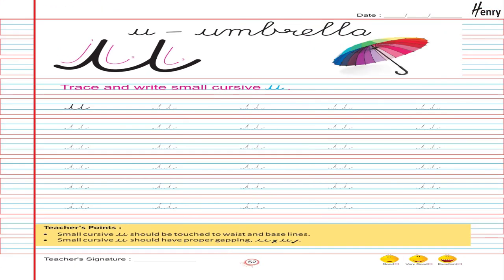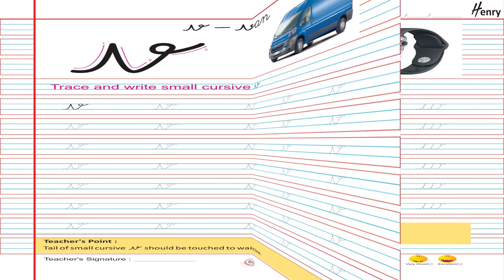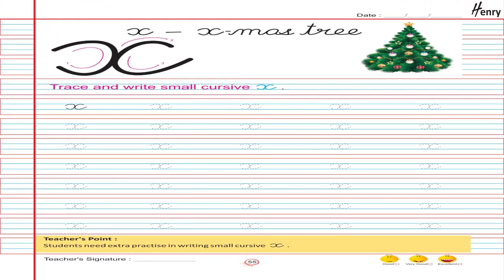U. Umbrella. Trace and write small cursive U. V. Van. Trace and write small cursive V. W. Watch. Trace and write small cursive W. X. Trace and write small cursive X.